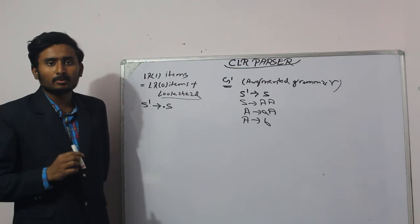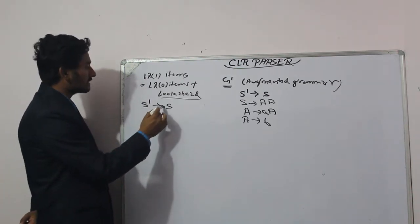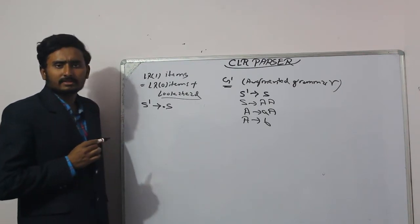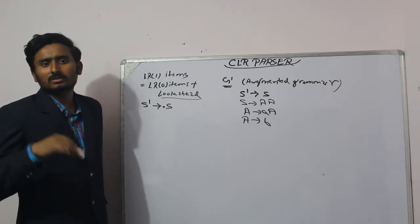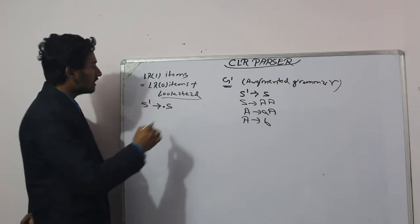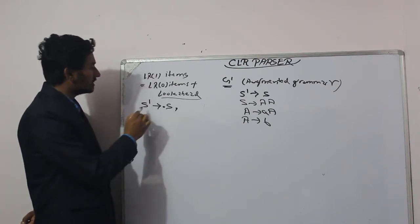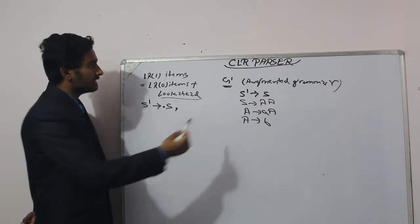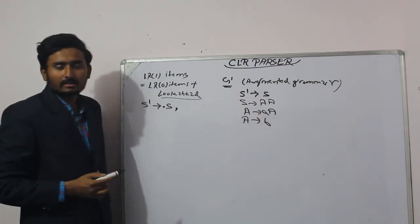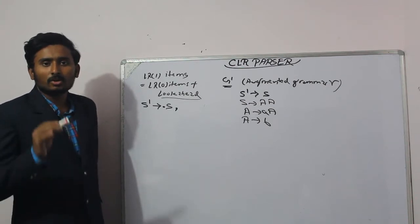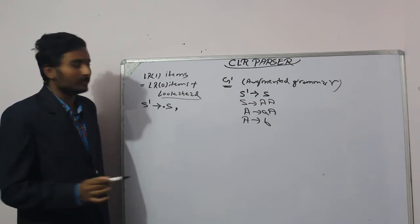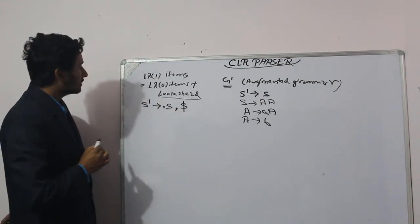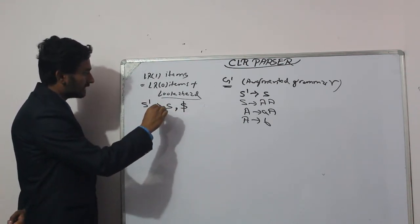Since this is LR1, we need to include the lookahead symbol. For any augmented production — S' derives S — the lookahead is always dollar ($). So we write dollar here. After S there is a non-terminal, so we must write every production derivable from S.